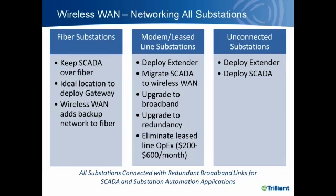There are three classes of substations. At the fiber substations, we keep SCADA running over the fiber network, and this is an ideal place to start the wireless WAN by deploying a gateway — which also provides a backup to the fiber network through the wireless mesh. At the modem or lease-line substations, deploying an extender upgrades communications from lease lines to broadband with redundancy, eliminating monthly lease-line operating expenses. For lease lines running $200 to $600 a month, the return on investment is very quick.